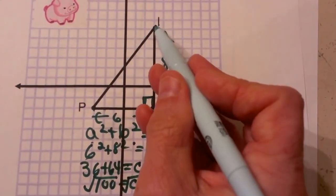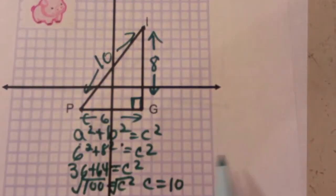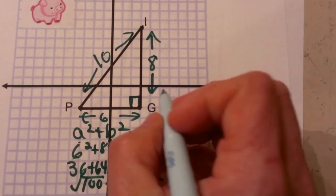That means our side PI measures 10. Not all of them will come out nice and neatly like that, but this one did. Now if we need to find the perimeter,